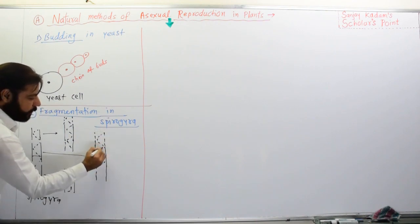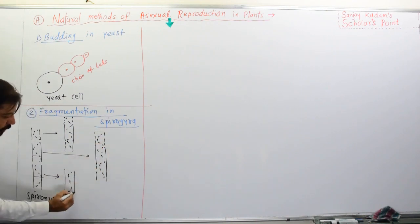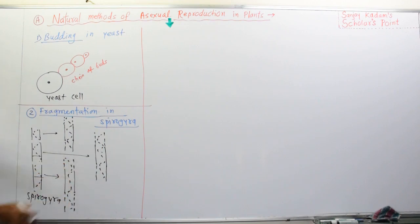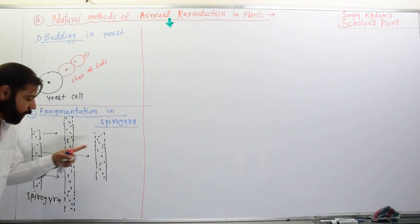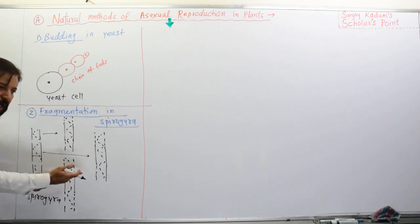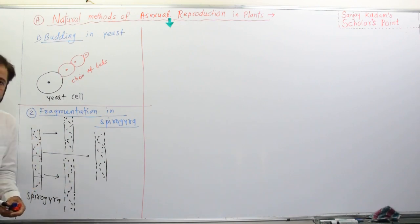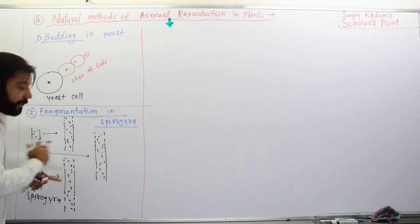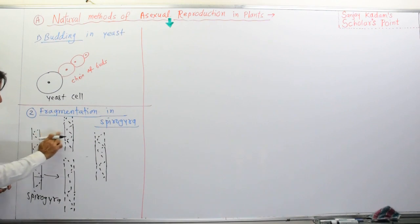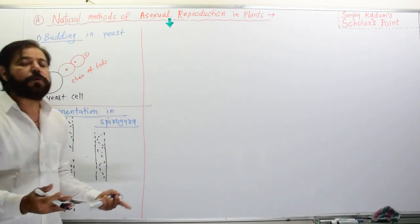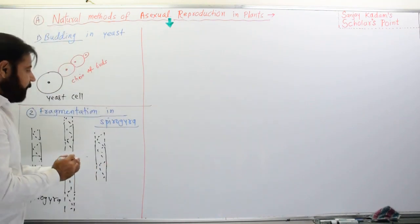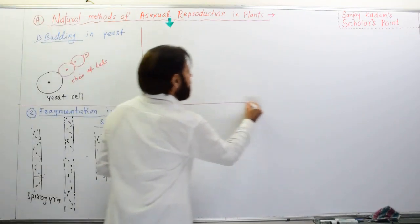Each fragment has the ability to grow and form a new Spirogyra plant. In this way, one, two, and three new Spirogyra algae are formed from one parent alga by the method of fragmentation. Each fragment, each piece, gives rise to a new Spirogyra very rapidly.